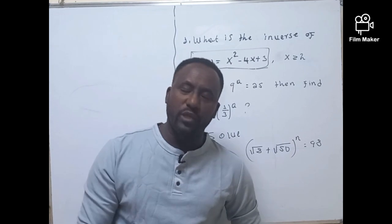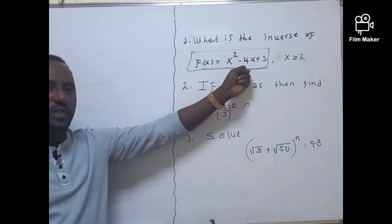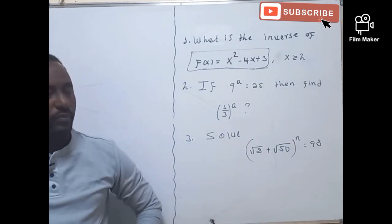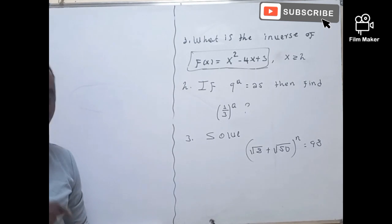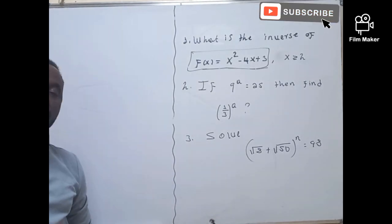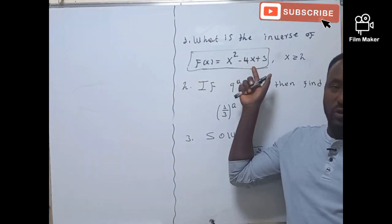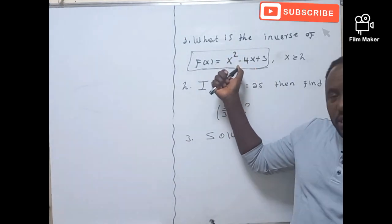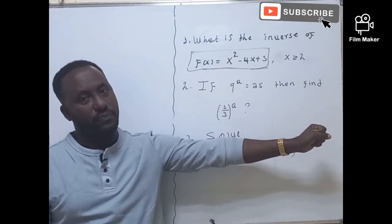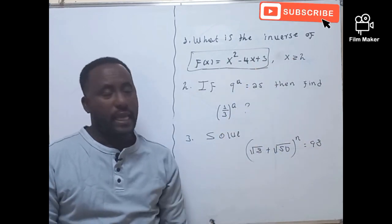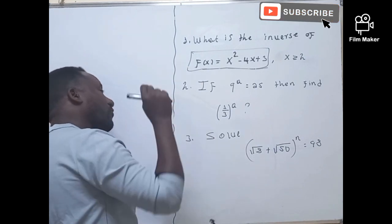Now let's come to how we are going to find the solution of this problem. The first problem asks: what is the inverse of this function, how could you find the inverse of this function for x greater than or equal to 2? Before finding the inverse of any function, the first question you have to think about is: can we say that every function is invertible? A function is invertible if and only if it is one-to-one. To check whether this function is one-to-one, we need to look at the minimum value for the restricted domain.